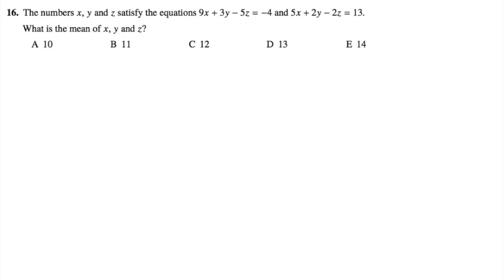Reading this question, the first thing that comes to light is the fact that there are three unknowns: x, y, and z. I have two equations, so let's write those up. 9x + 3y - 5z = -4, and the second one is 5x + 2y - 2z = 13. Again, there are three unknowns and two equations, so we cannot directly solve this.